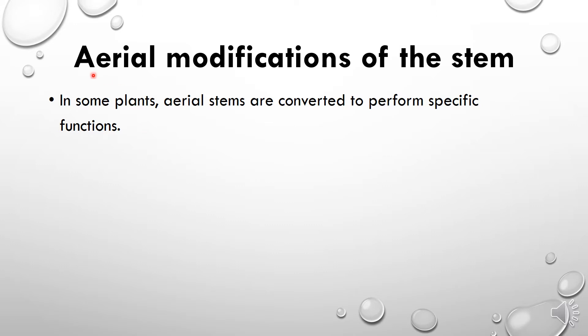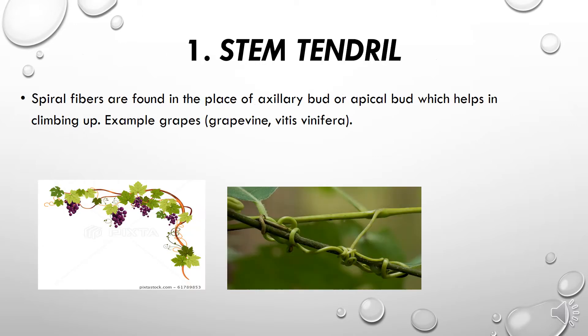First we will study about the aerial modification of the stem. 'Aerial' means above the ground. In some plants, aerial stems are converted into various different forms or shapes to perform specific functions. The first type of aerial modification is stem tendrils.